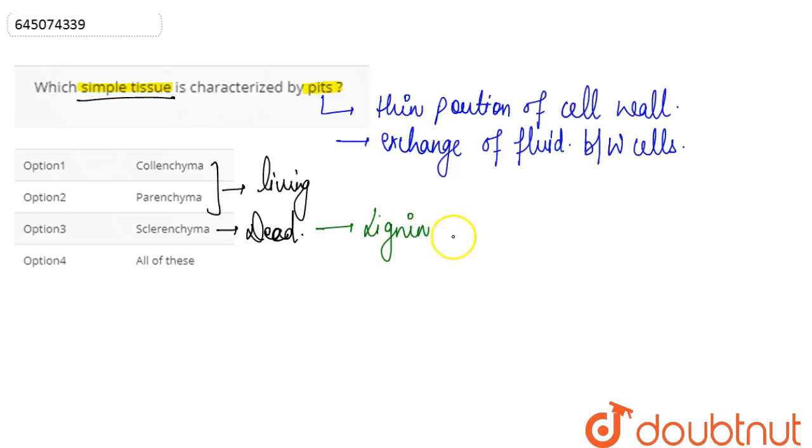It is a strong tissue, and pits do not have lignin. At the place of pits there is no deposition of lignin, and they are found in the walls of the dead tissue with lignified cell wall.